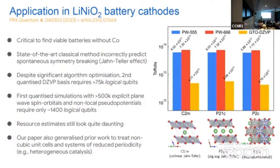If we could make the implementation with the lambdas more efficient, we could possibly make the Toffoli counts here similar to what they were in the earlier scheme.